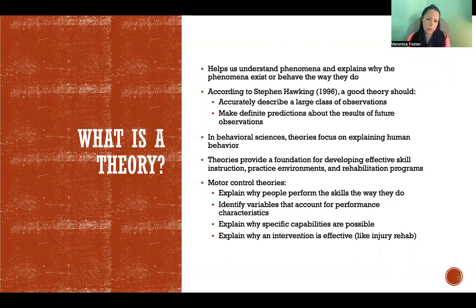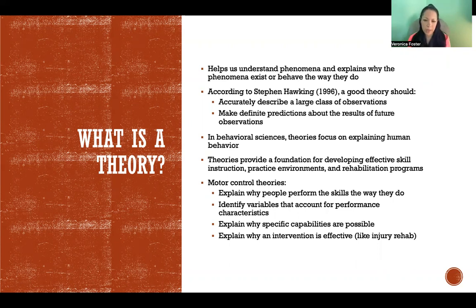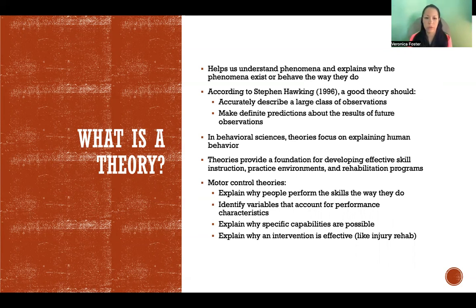Motor control theories explain why people perform skills the way they do. They identify variables that account for differences in performance from one individual to another or one trial to another. They explain why specific capabilities are possible, and they explain why an intervention is effective — like injury rehabilitation interventions such as physical therapy.